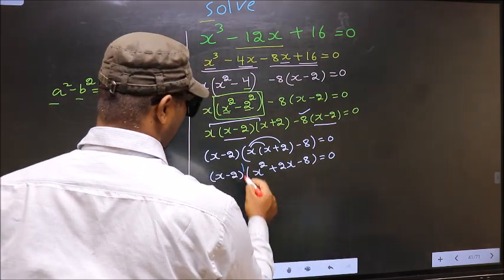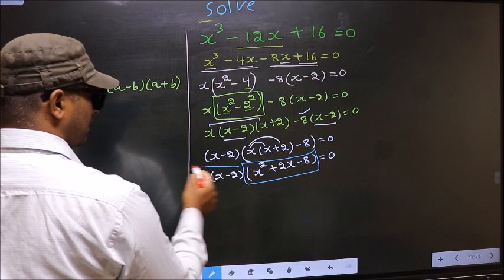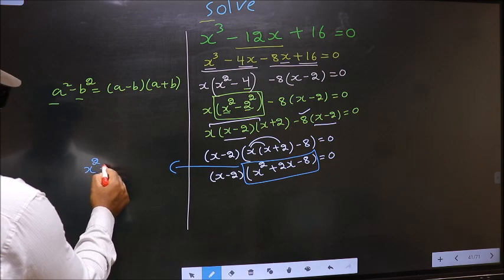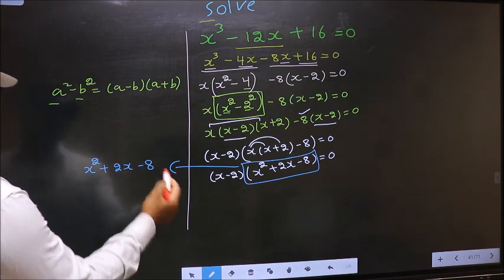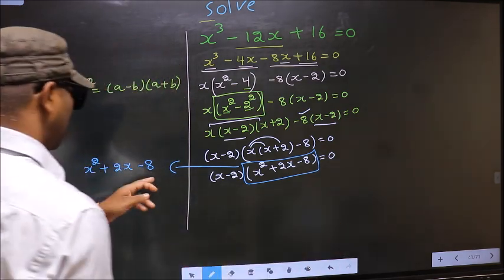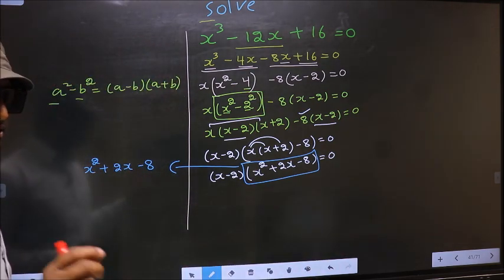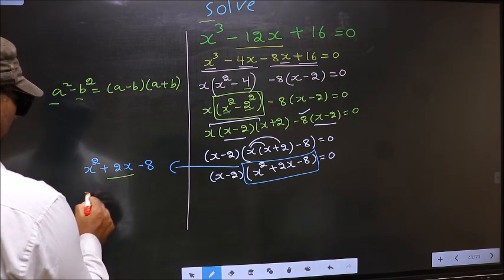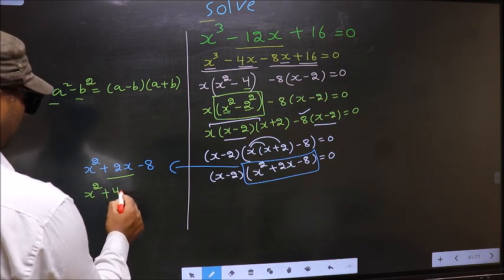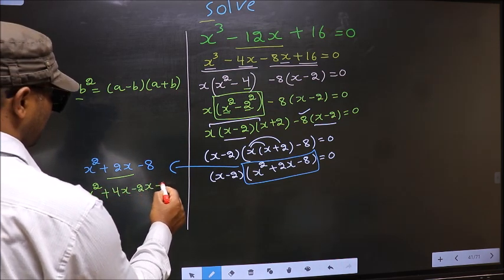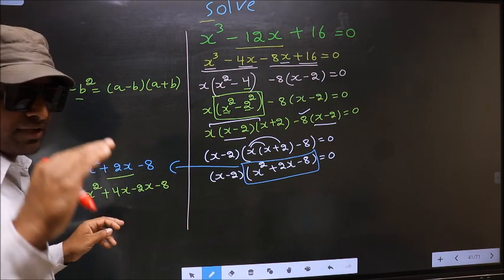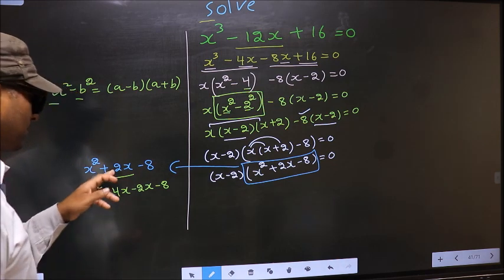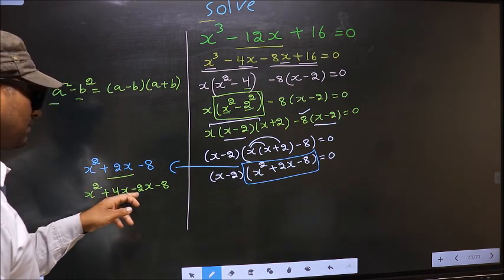Now we got a quadratic. I will factorize this quadratic. That is x squared plus 2x minus 8. To factorize this we should split the middle term, that is plus 2x. So in place of plus 2x I write plus 4x minus 2x minus 8.